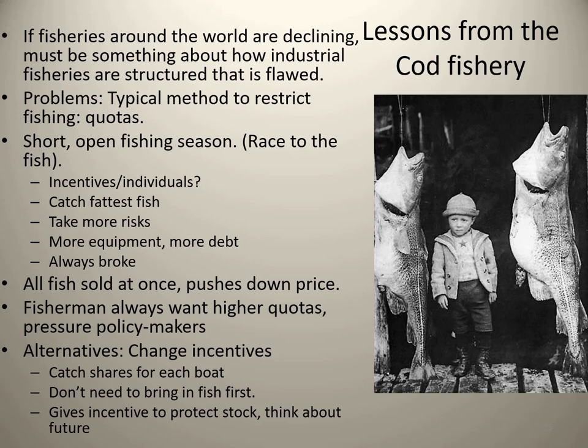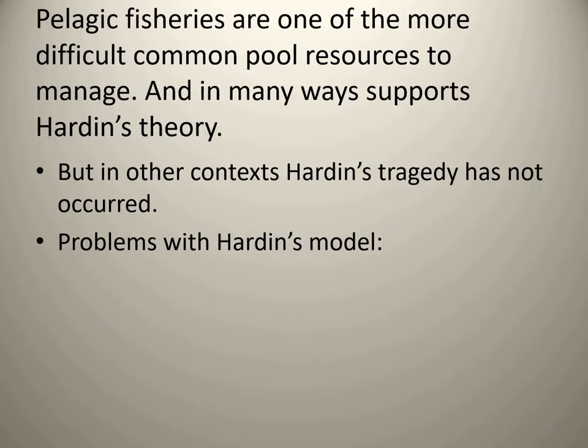This is one example of a potential alternative — changing how we structure the system to get different outcomes. The way we do things is not inevitable; a lot of it is based on individual profits, and we can change the system. Pelagic fisheries like the cod fishery are one of the more difficult common pool resources to manage. In many ways, this example supports Hardin's tragedy of the commons. But in other contexts, Hardin's tragedy has not occurred. There are several flaws or assumptions in his model that are important to understand.